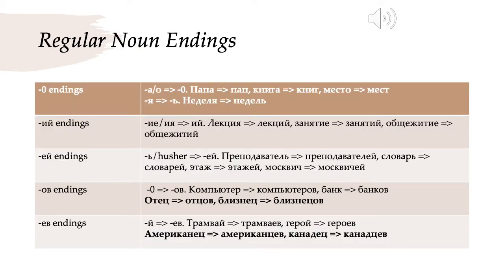So that was it for the regular endings for the genitive plural. On slide six in the PowerPoint, I have a list of regular endings. The possible regular endings are: a zero ending, where we drop any final vowel — so папа becomes пап, книга becomes книг, место becomes мест. If we have -я at the end of the word — so consonant + я — we drop the -я and add a мягкий знак, so недéля becomes недéль with a мягкий знак. And then we have the -ий endings, where -ия or -ие go to -ий — so лéкция becomes лéкций, занятие becomes занятий, общежитие becomes общежитий.